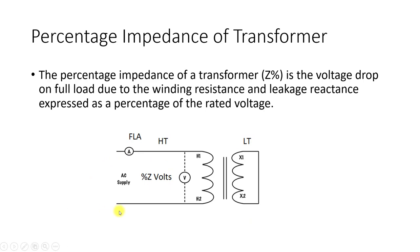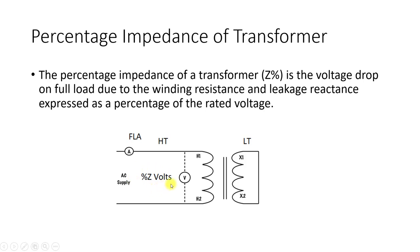Connect a variable AC source to the high-voltage side and increase the voltage very slowly and carefully while measuring the current. When the current reaches the full load amperes at the HV side, stop increasing the voltage and measure the voltage reading. This measured voltage is the impedance voltage — it represents the voltage drop that will appear from no load to full load for the transformer.